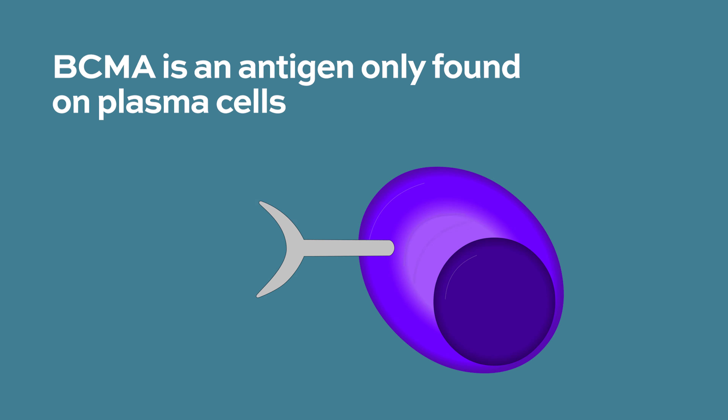BCMA is an antigen that's present on plasma cells, both normal plasma cells as well as multiple myeloma cells. It's hardly expressed anywhere else — predominantly only in plasma cells and myeloma cells. That makes it an excellent target, because you want targets that are only present on the myeloma cells, so if we develop an antibody to that antigen, it's going to be very specific to the myeloma cells.